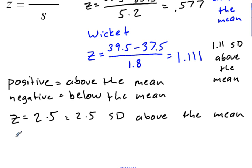But if I have a negative z-score of negative 1.5, that means that that data value that I was looking at is 1.5 standard deviations below the mean.